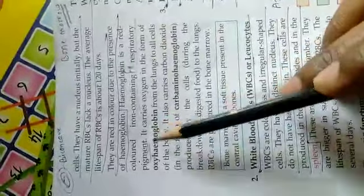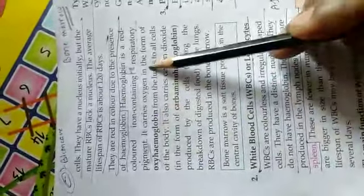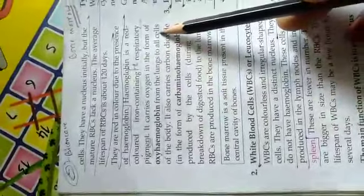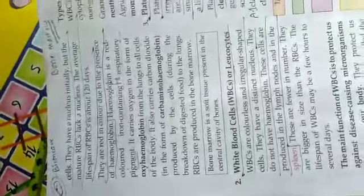This respiratory pigment is found inside the lungs, and because of hemoglobin the blood color is red. Now, it carries oxygen in the form of oxyhemoglobin. When hemoglobin combines with oxygen, what forms? Oxyhemoglobin. So it carries oxygen in the form of oxyhemoglobin from the lungs to all cells of the body. So oxyhemoglobin comes from the lungs and goes to the entire body.